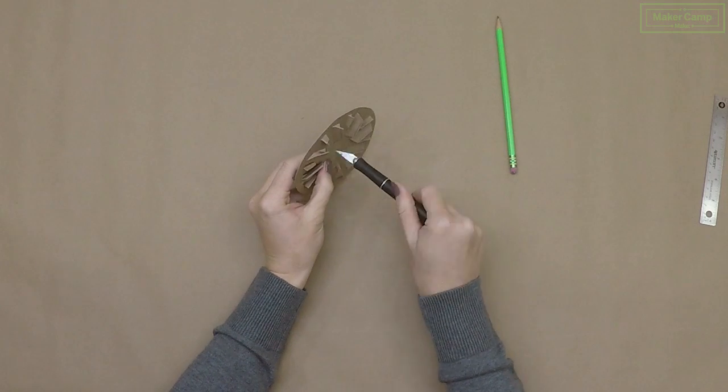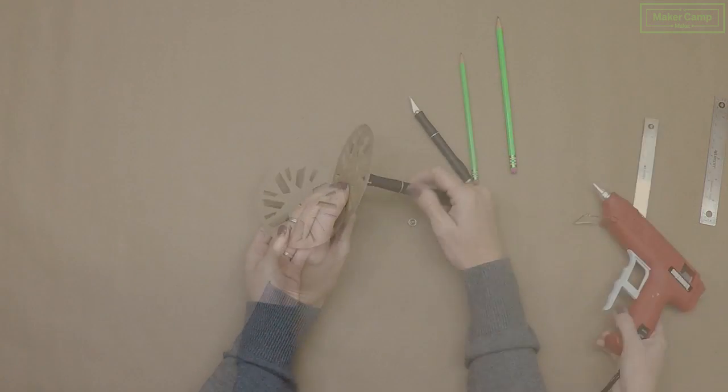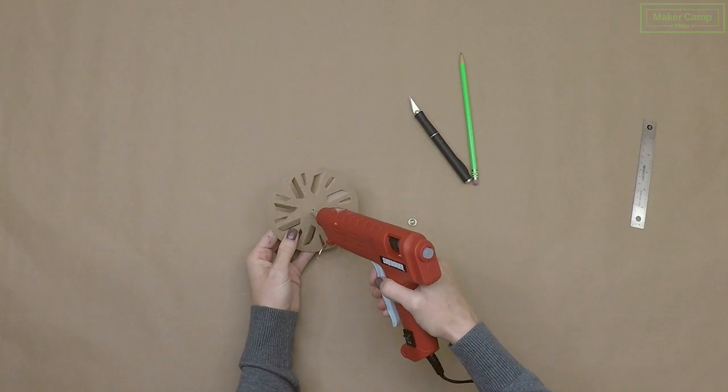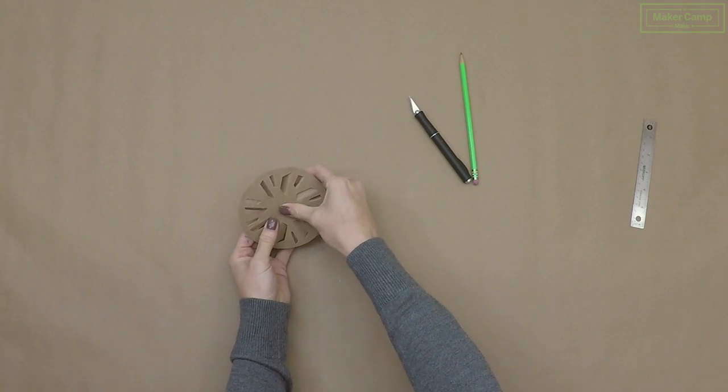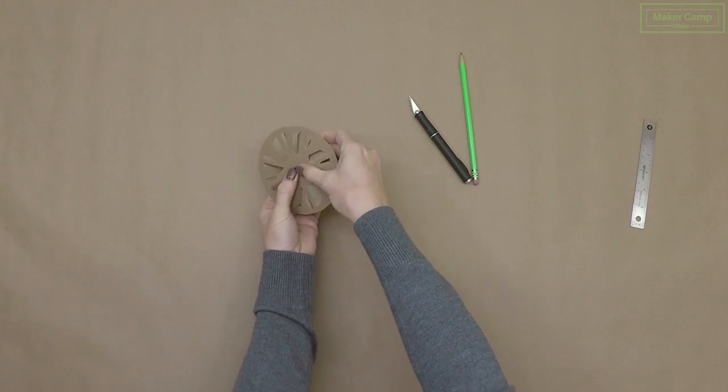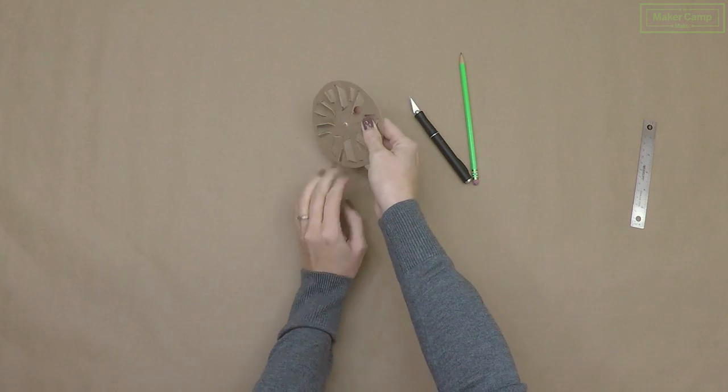Poke a small hole in the center of your turbine. And we're going to use the bottom part of a snap. The pointy part of your floral wire will actually stick up inside that little snap nub and that's how your cylinder will spin.